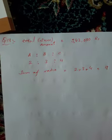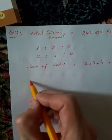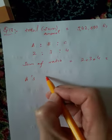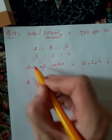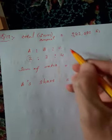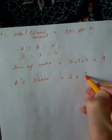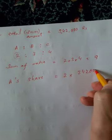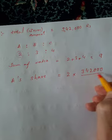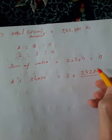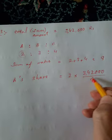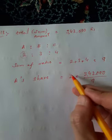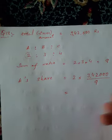Which equals 9. A's share will be 2 times the total amount divided by 9. The total amount is 342,000 divided by the total sum of ratios, which is 9.